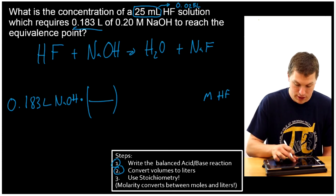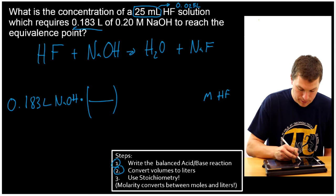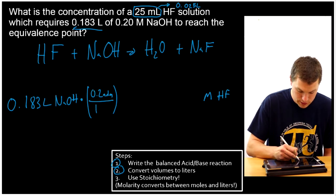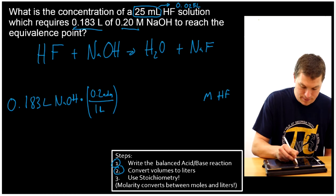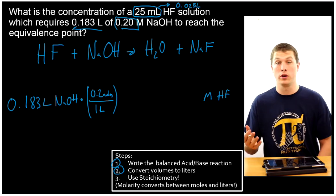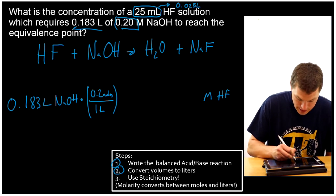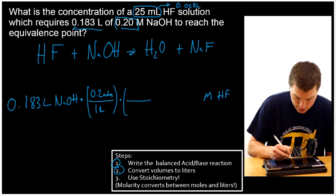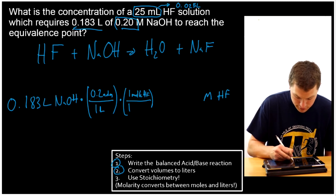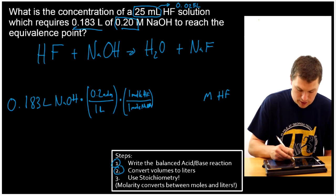Well, I'm going to use molarity to convert that to moles. So I'm going to do 0.2 moles over 1 liter. That comes from this guy. 0.2 molar is the same as 0.2 moles for every 1 liter. And now I use my stoichiometry step and I'll notice that I need 1 mole HF for every 1 mole NaOH. So my NaOH cancels out.